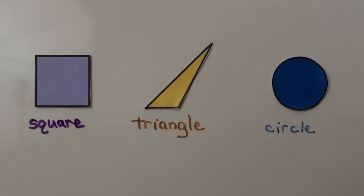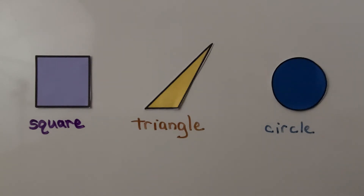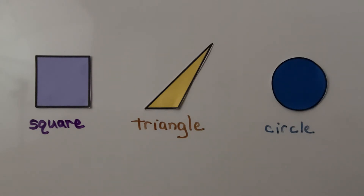Let's see if we can figure out this puzzle, this riddle. Here's the riddle: I am a shape with three straight sides and three vertices. Which shape am I? We have a square, a triangle, and a circle. Which of these shapes has three sides and three vertices?